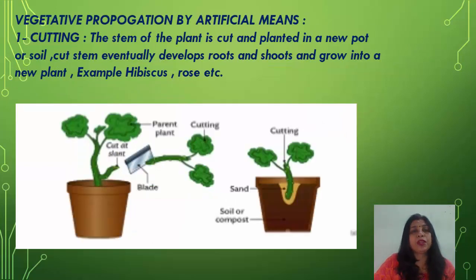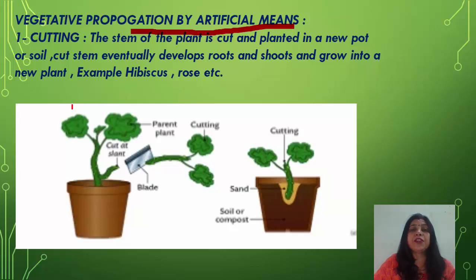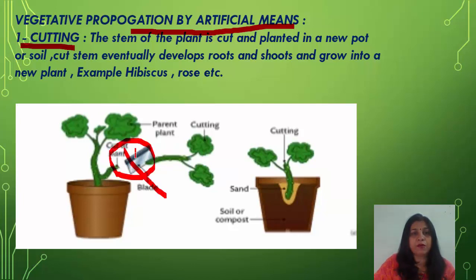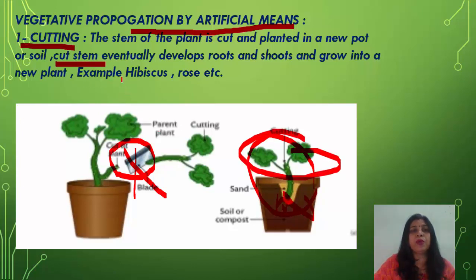All those methods — runners, offsets, stolons, root tubers, and stem tubers — were natural means of vegetative propagation. Vegetative propagation can also be done by artificial means. The first artificial method is cutting: the stem of the plant is cut and then planted into a new pot or soil. The cut stem eventually develops roots and shoots and grows into a new plant. Examples are Hibiscus (China rose) and rose.